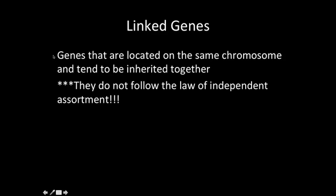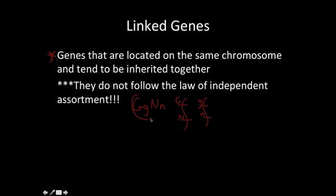Linked genes are genes that are located on the same chromosome and tend to be inherited together. If these were linked genes, they would both be on the same chromosome — big G and big N on one chromosome, little G and little N on the other. How close they are together, or how far apart, is really important for determining what's going on with linked genes.